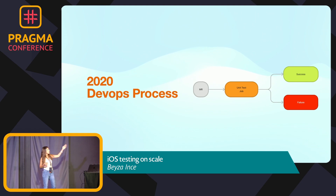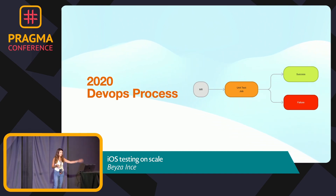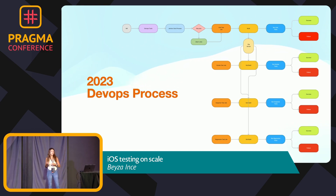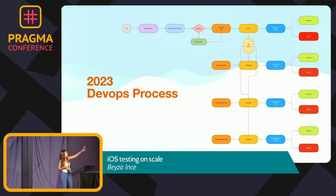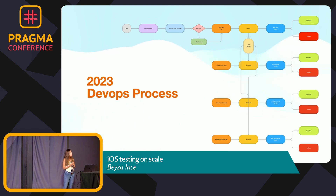Now we can look at our DevOps process. In 2020, we had just one pipeline for Jenkins — the unit test pipeline — and we decided if a merge request could be merged based on those results. Now in 2023, we have several different workflows to run unit, smoke, regression, and snapshot tests efficiently. Notably, we upload the build generated from unit tests to our internal file server, which allows us to run other UI tests in parallel using the same single build.